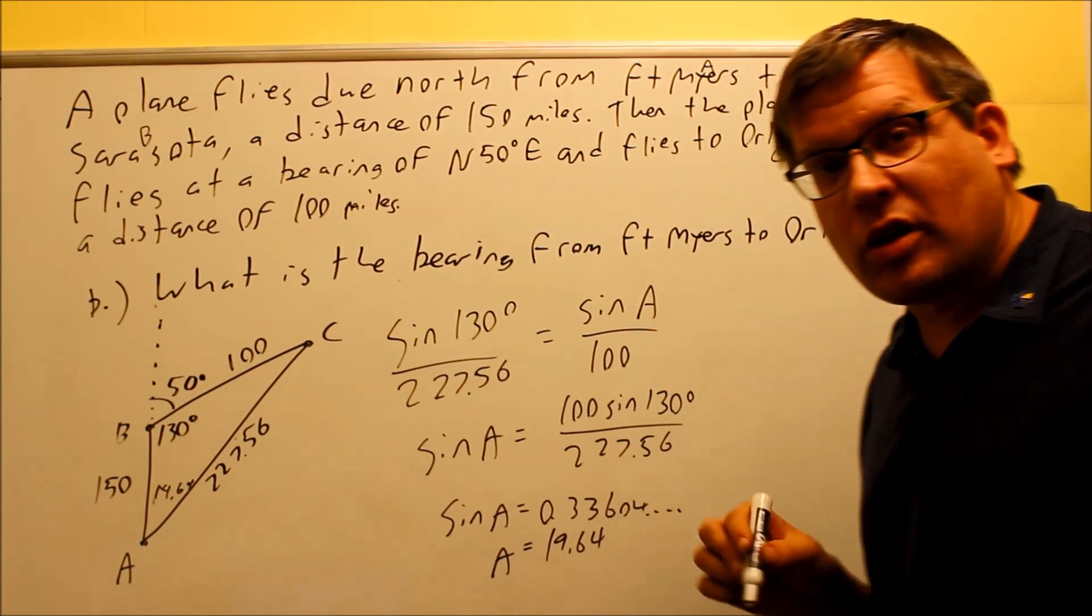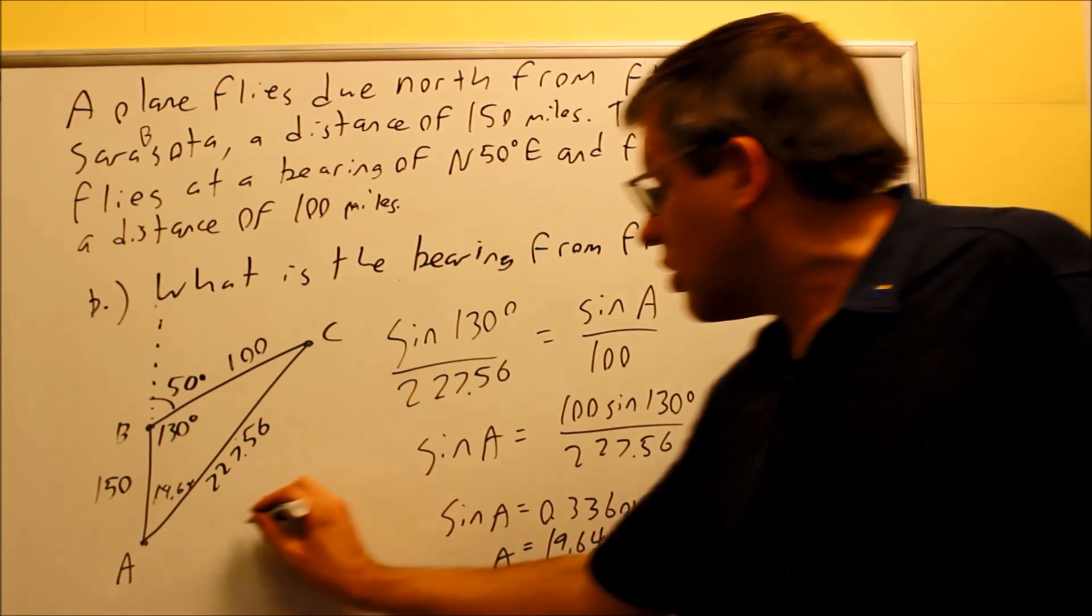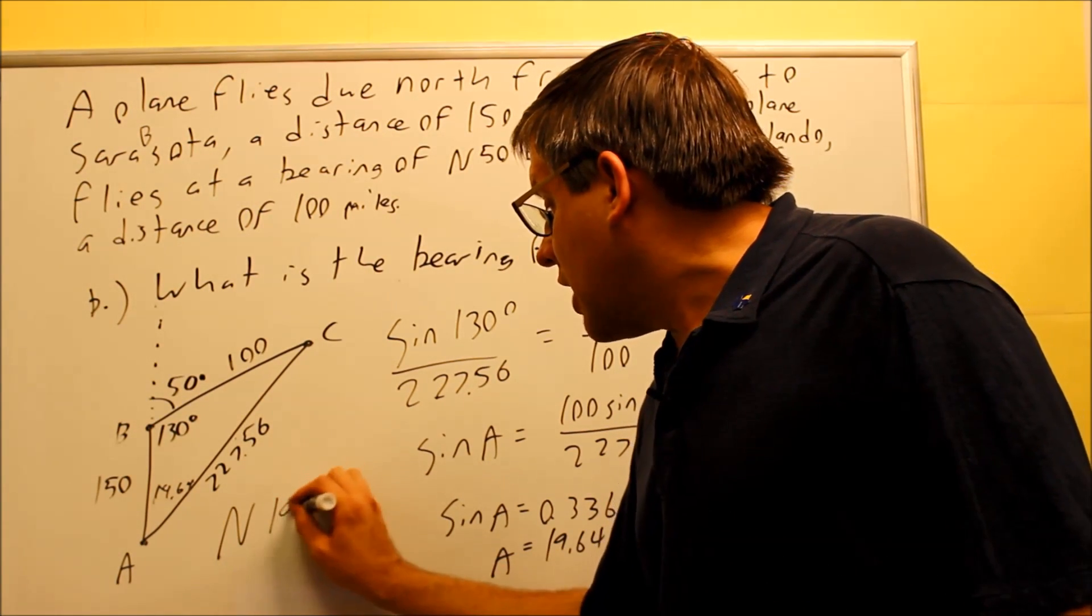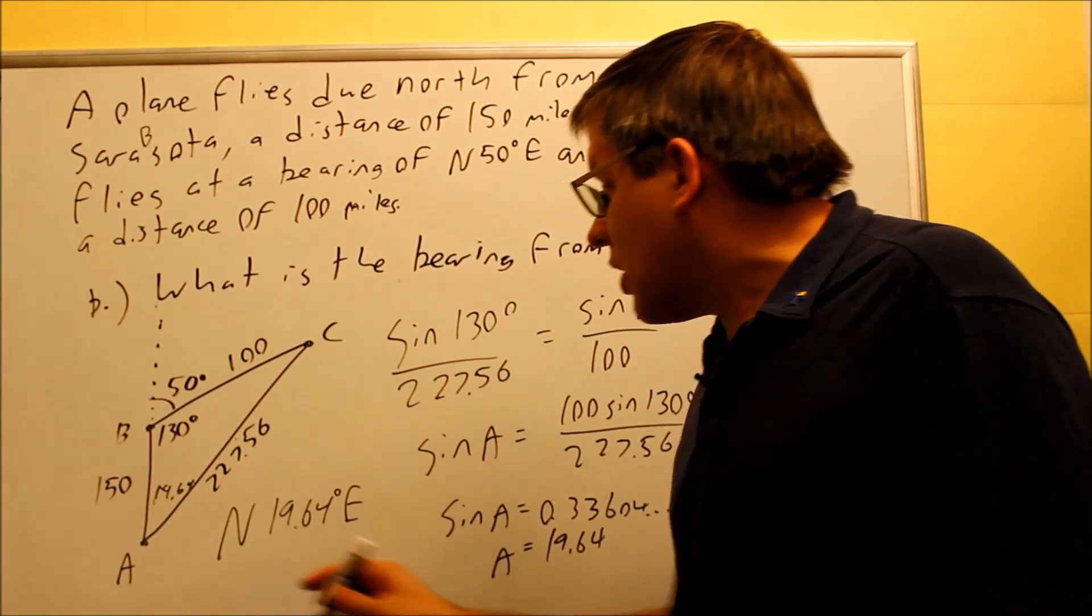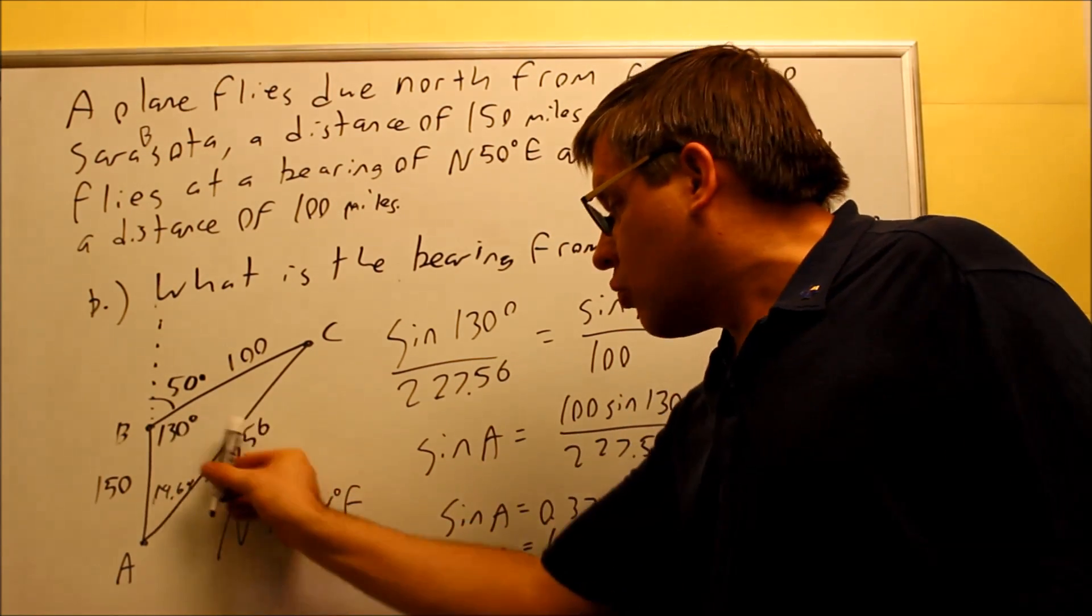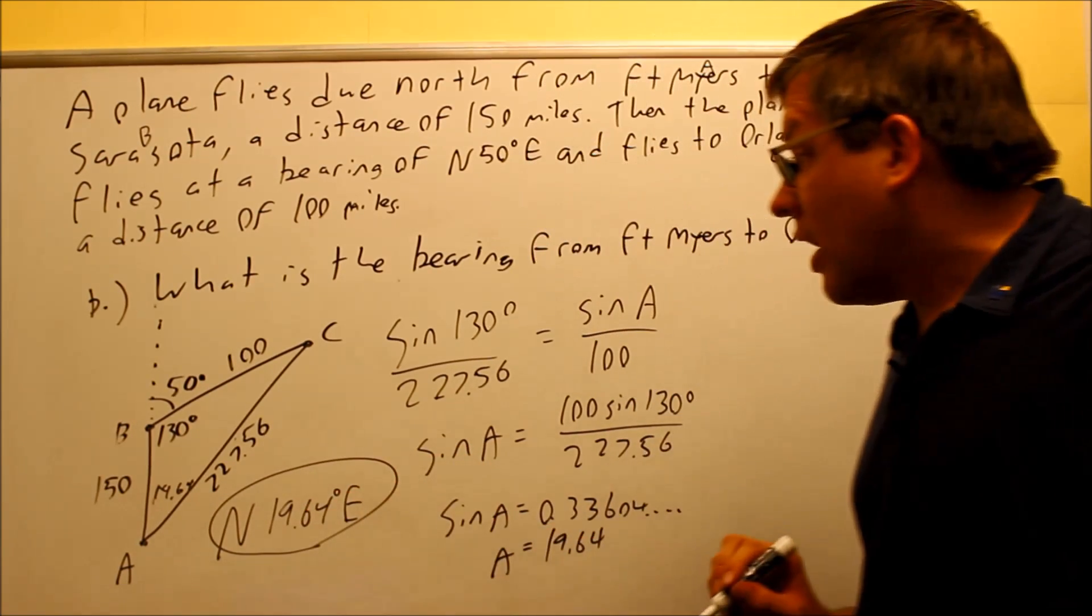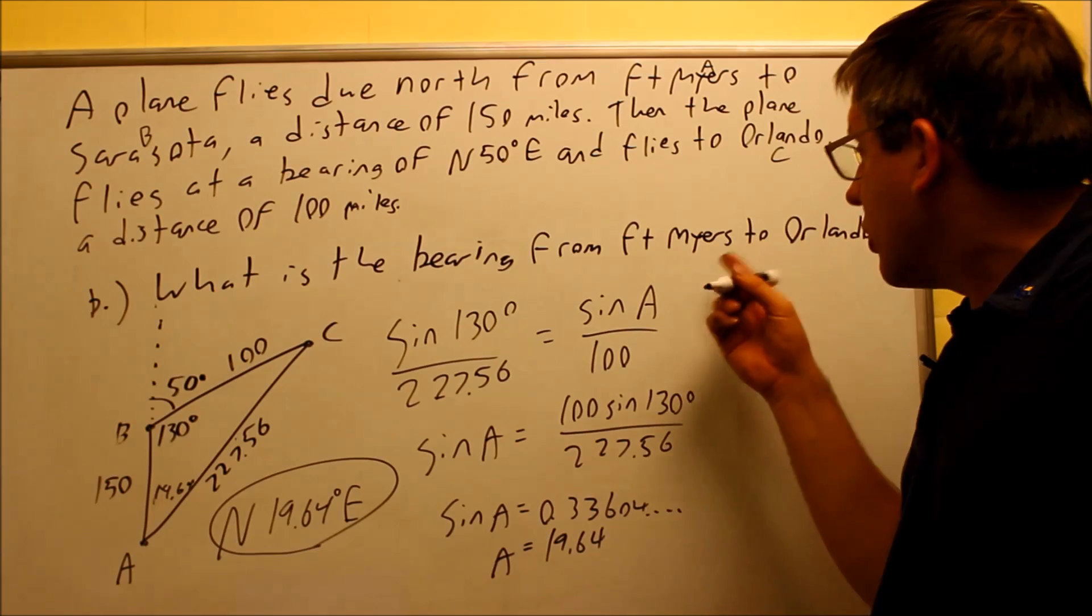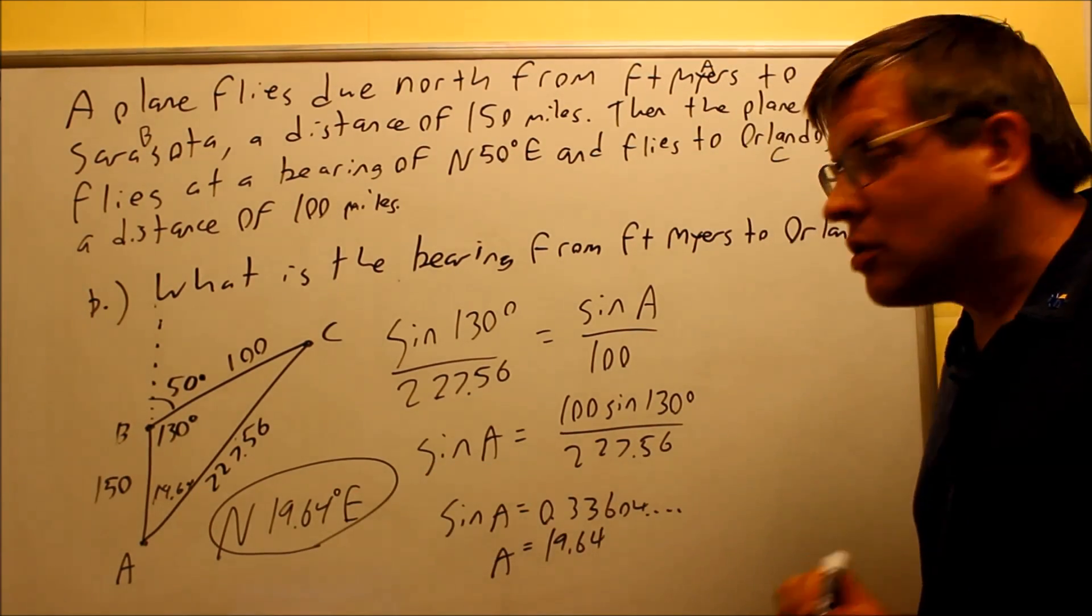We're going to put some directional letters on that because, remember, a bearing means that you've got to have those letters on it too. You can't just put the angle because that's not a bearing. A bearing has to have the directional letters. So to be correct, you're going to do this: North 19.64, that's the angle here, and that's going to be east because you're going to go north and you're going to go to the right, so that would be north and east there. So this would be your answer. That would be the bearing to go from Fort Myers directly to Orlando, north 19.64 degrees east.